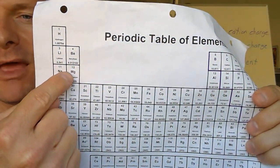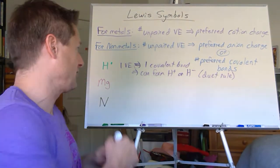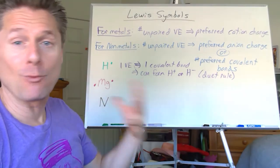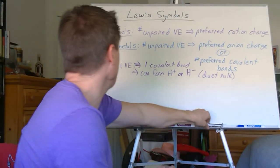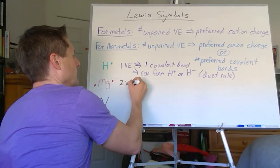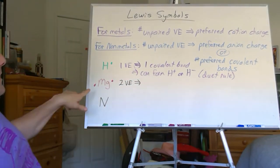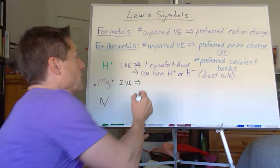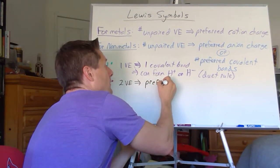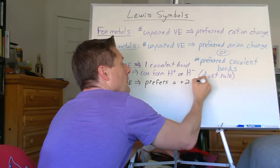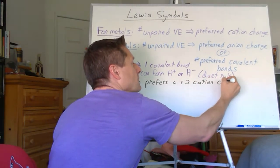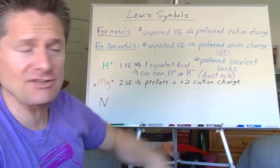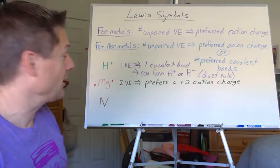Let's do magnesium. Magnesium is an alkaline earth metal in group 2A, so it has two valence electrons. We'll draw one, then two — you can go top-bottom or right-left, it doesn't matter. Both electrons are unpaired, and since magnesium is a metal, it prefers a +2 cation charge. Nothing really new here — you can do this easily from electron configurations, but this is a shortcut.